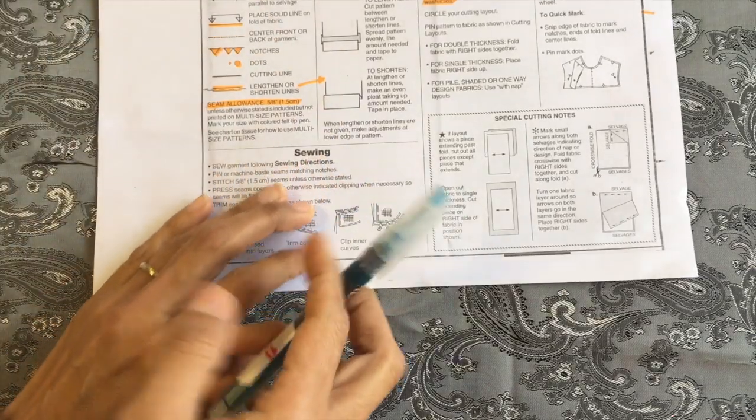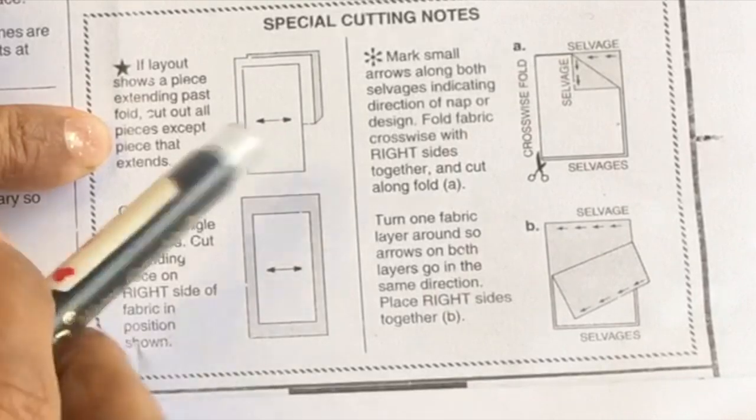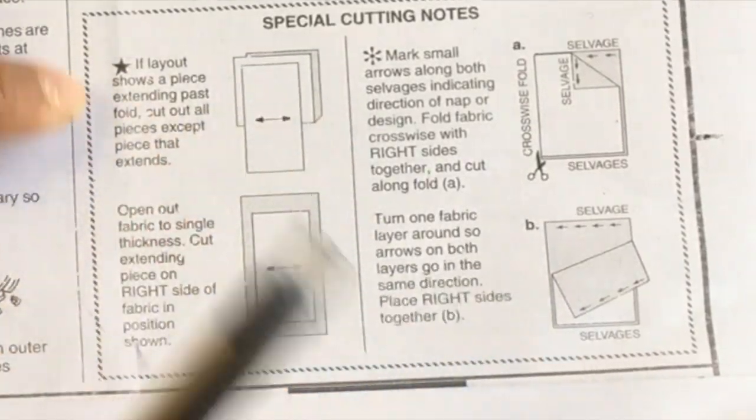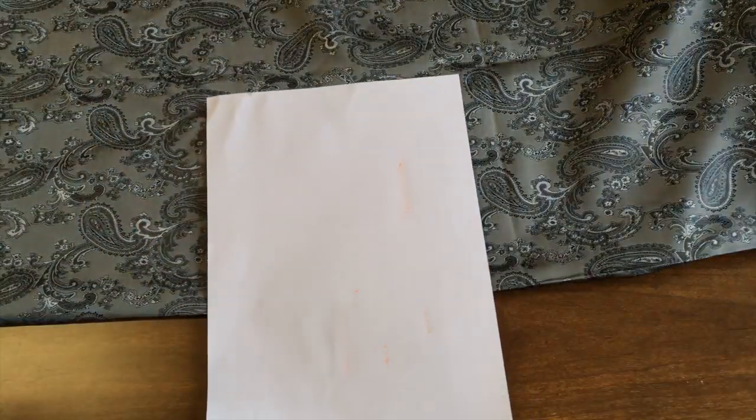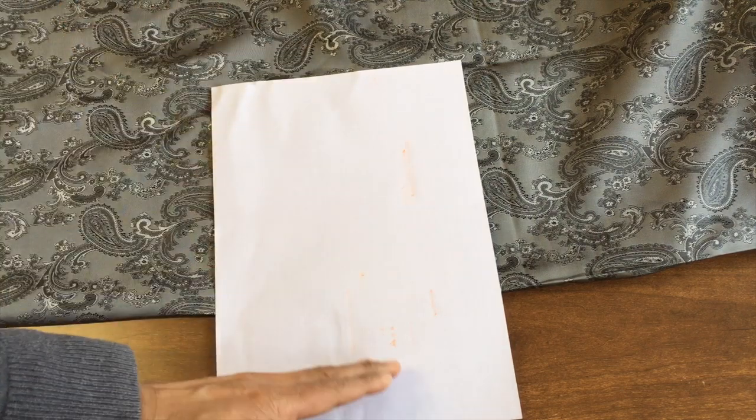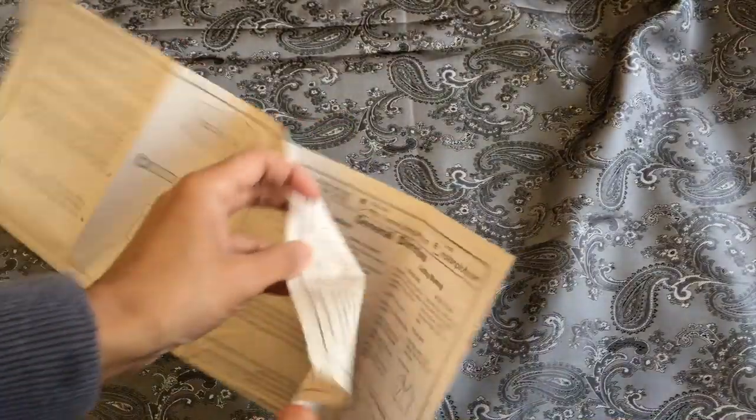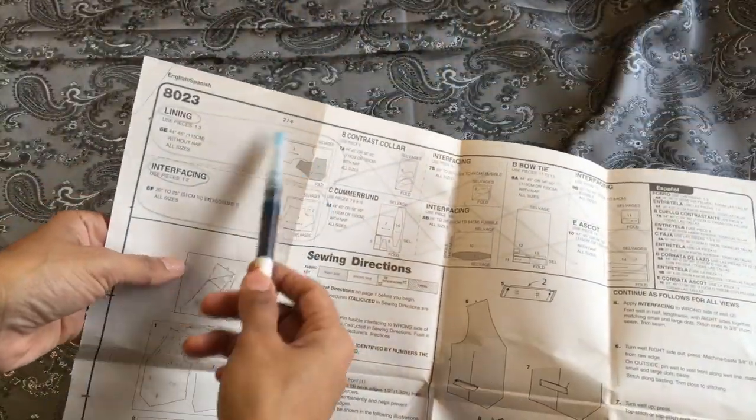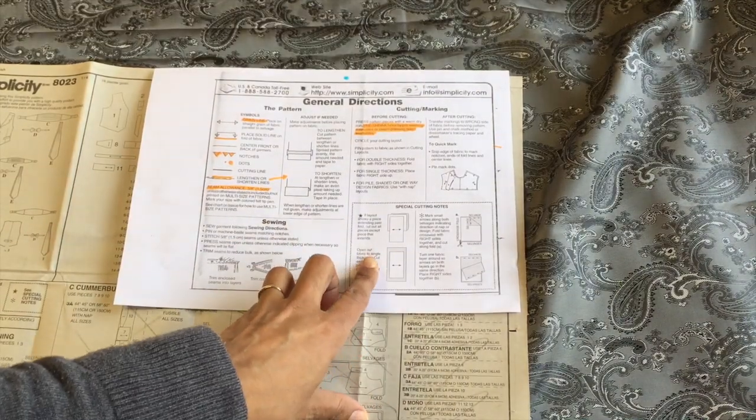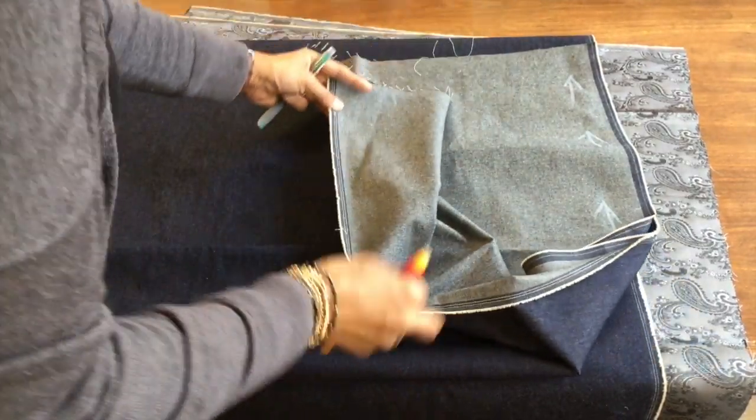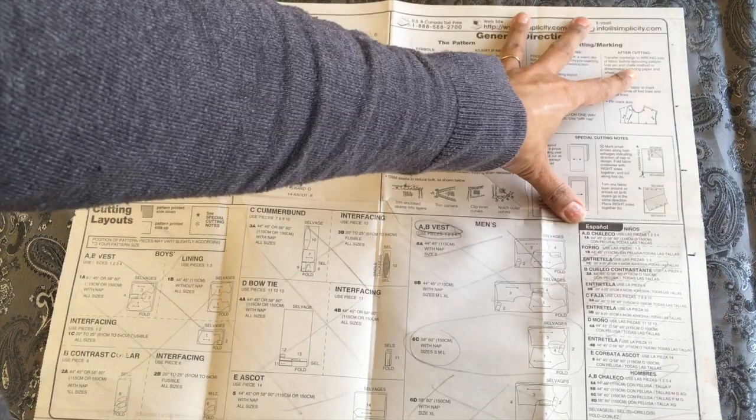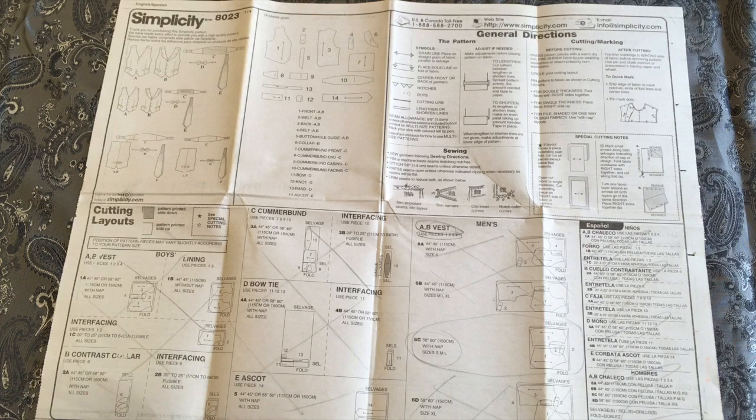Now special cutting notes here. If the layout shows a piece extended past the fold like that, basically what they're saying is after you've cut all the other pieces, unwrap the fabric and cut the rest of the pattern out. And we can check that. You can see that nothing hangs over the fabric image. So we've got nothing like that appearing. Open out, and this second one is mark small arrows along both selvages.